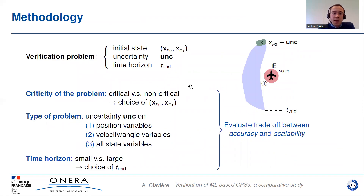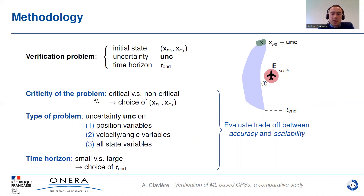For each use case, we built a set of verification problems. A verification problem is an initial state — for instance, the initial position of the intruder relative to the ownship in the ACAS — plus an uncertainty on this initial state and a time horizon along which the system is evaluated. To evaluate both the accuracy and scalability of the tools, we consider different criteria: the tractability of the problem (can the system reach an unsafe state without any command from the controller?), the type of problem (uncertainties on position variables only, velocity and angle variables only, or all state variables?), and finally the time horizon, which can be either small or large.